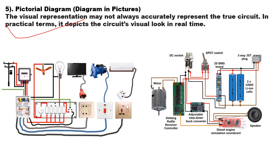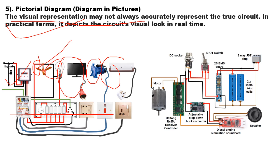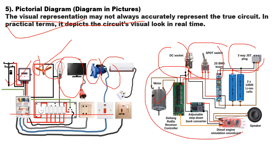The next one is the pictorial diagram, also called a diagram in pictures. The visual representation may not always accurately represent the true circuit in practical terms, but it depicts the circuits as they look in real time. Here we see actual components in the circuits: electrical energy meter, fan, lamp, TV or computer connections, motor connections, and AC connections. We also see another pictorial diagram showing a DC socket, SPDT switch, 3-way adjust plug, and other components shown in 3D.